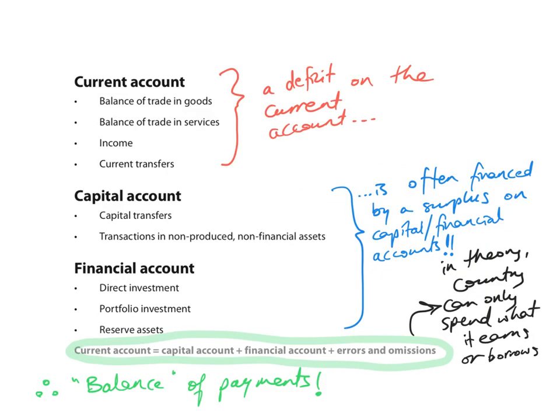And there you have it — all three components of the balance of payments: the current account, the capital account, and the financial account. I explained the current account in a previous video. Now, what is the relationship between all three accounts? Basically, the current account should equal the capital account plus the financial account plus any net errors and omissions.